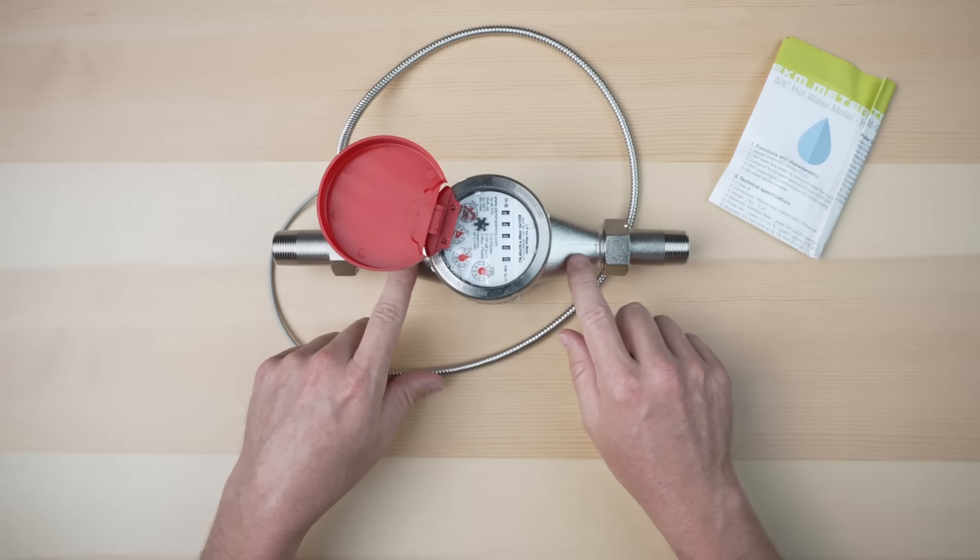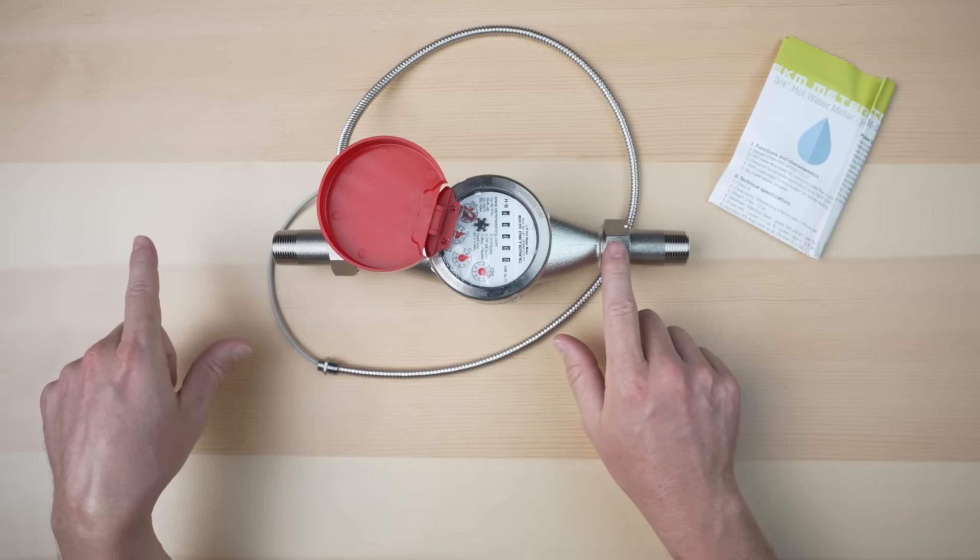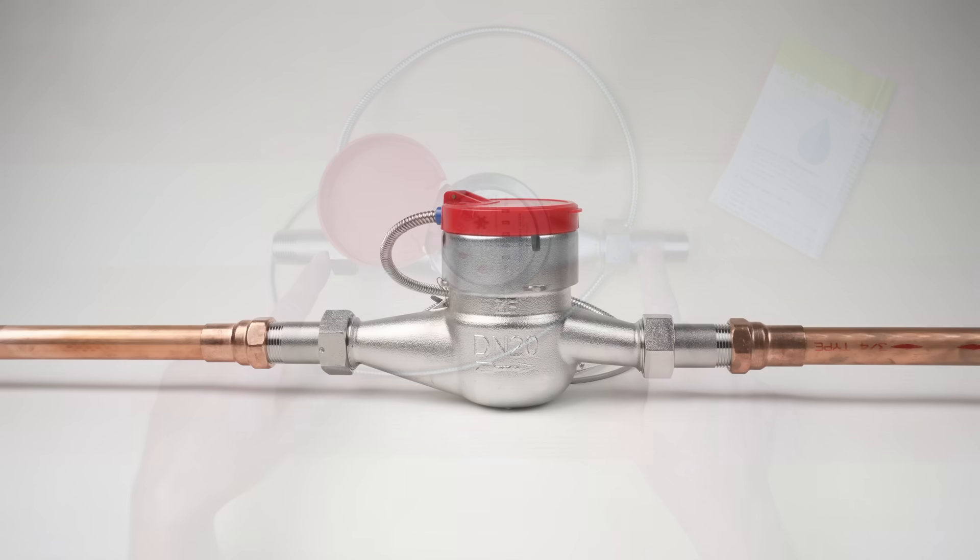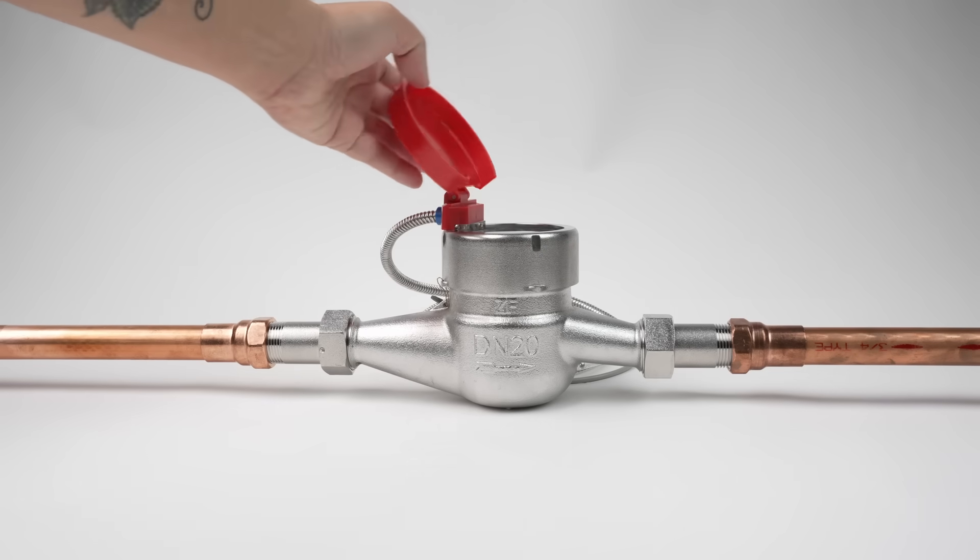For best accuracy, you want to install a straight piece of pipe before and after these two fittings. Before needs to be 10 times the diameter of the pipe. After is five times the diameter of the pipe.